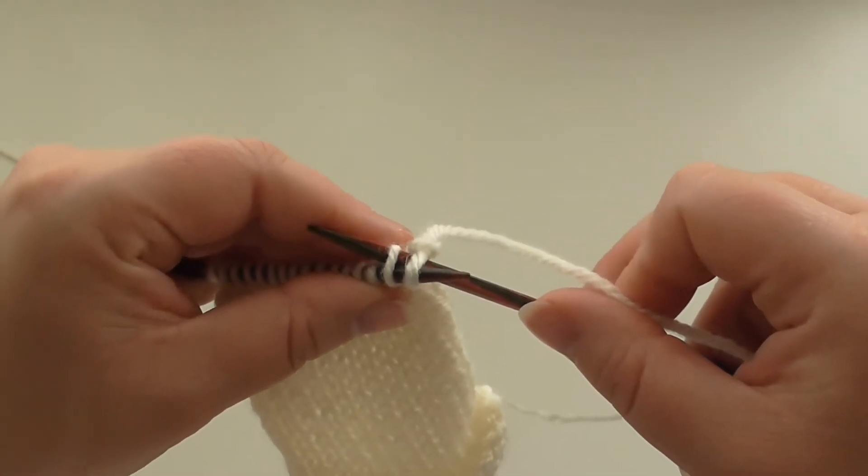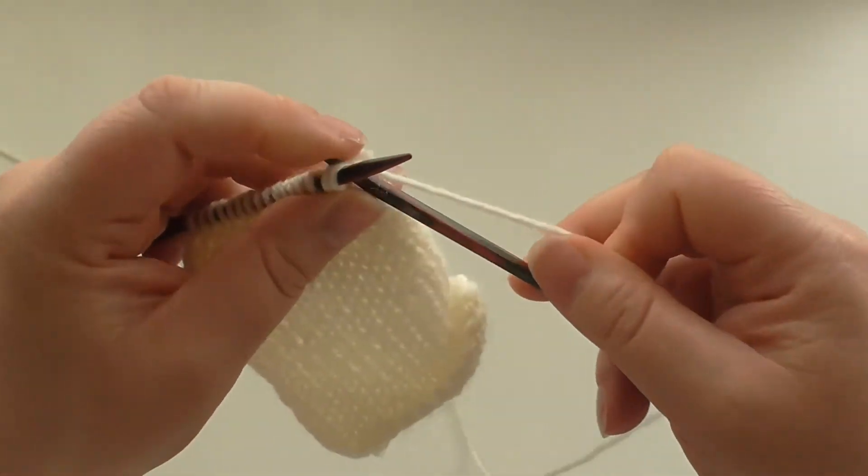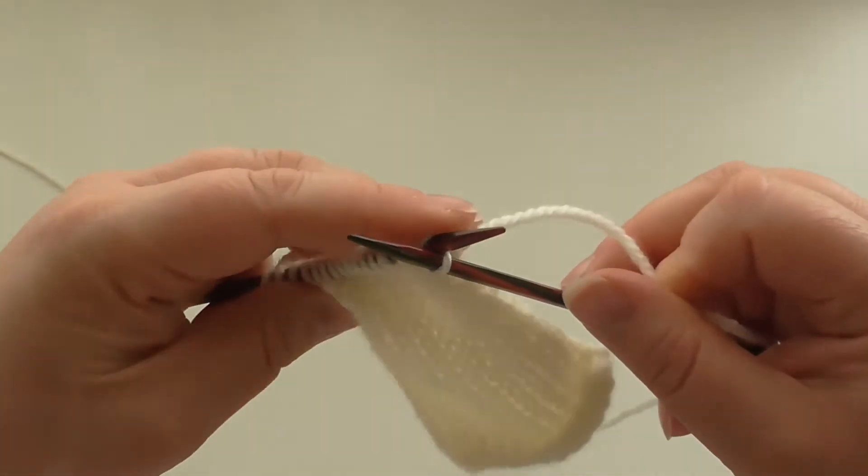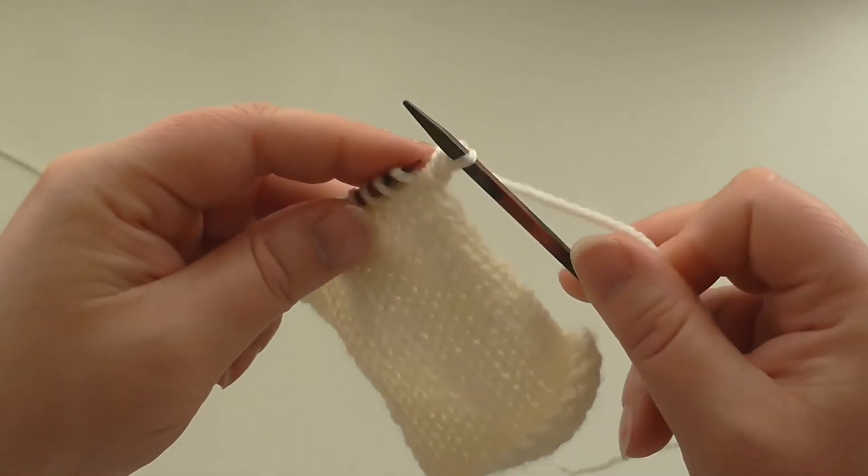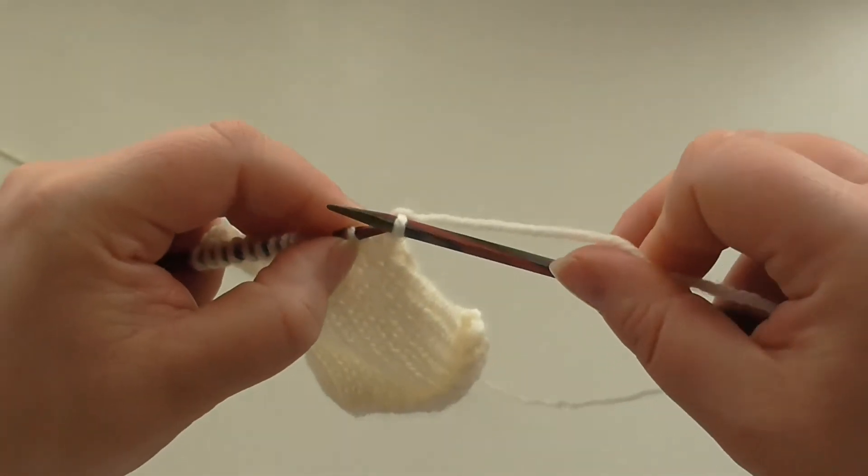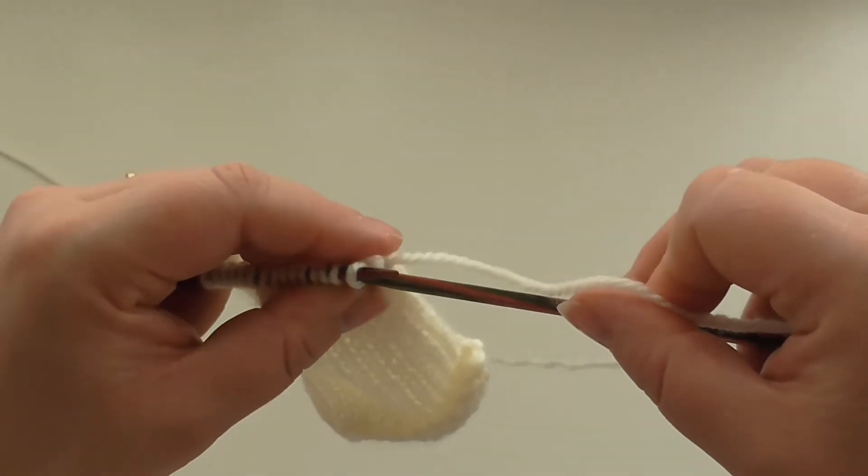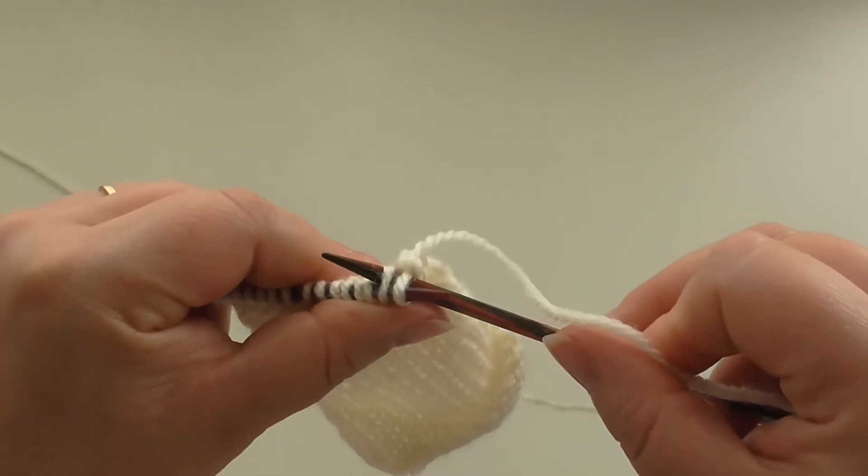Then we put those stitches back without twisting them onto the left-hand needle, and we knit them through the back of the loop. So the back there like that, that's it. And then back on without twisting the left-hand needle.